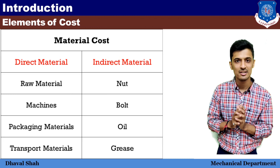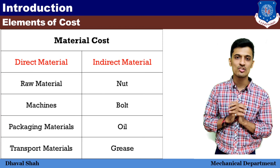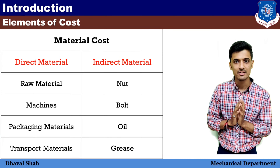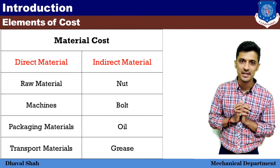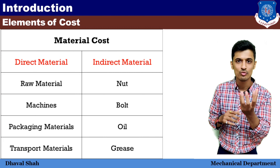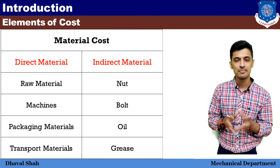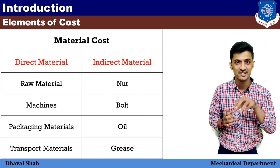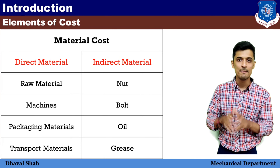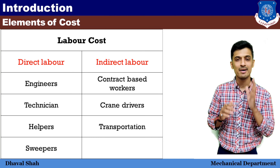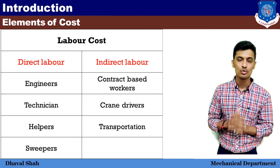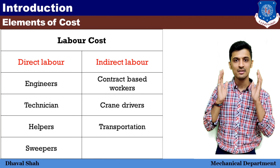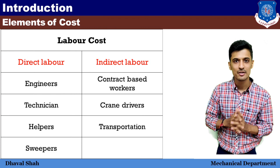So these are the types of cost — direct cost and indirect cost — jo humne dekha element of cost mein. Ab material ke under direct cost mein hum kisko ginenge — aisa material jo humari product ki cost ko affect kare usko bolenge direct material. For example agar ek fan banati hui company hai toh fan ki jo motor hai, fan ke jo wings hain usko hum direct material bolenge. Aur indirect material mein hum kisko ginenge — nut hai, bolt hai, oil hai, greasing hai — woh sab ko hum indirect material mein ginenge.